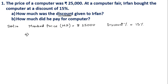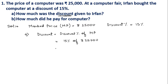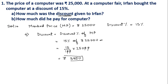To calculate the discount when discount percent is given, use the formula: Discount = Discount% of Marked Price. So Discount = 15% of ₹25,000 = 15/100 × 25,000 = 15 × 250 = ₹3,750.